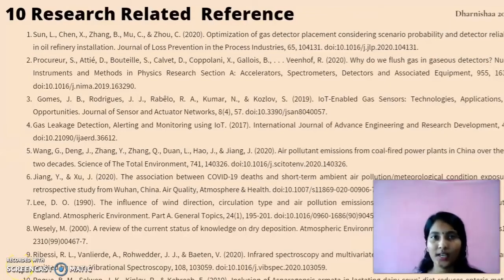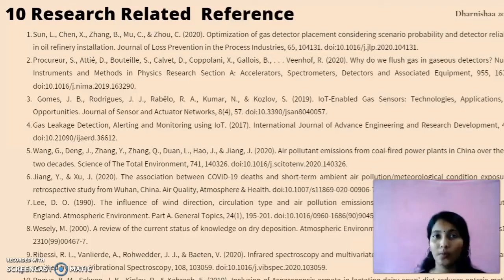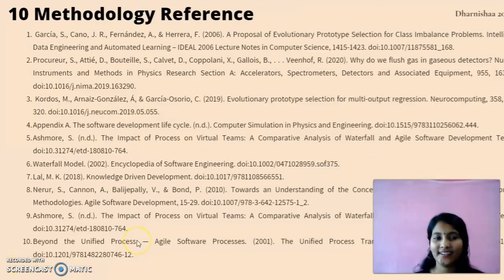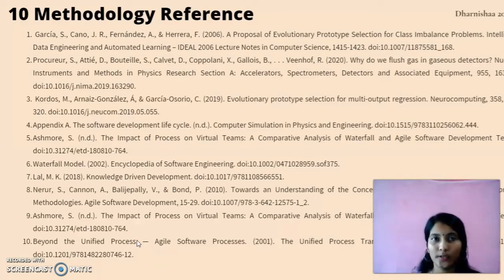As per my supervisor's advice, I have referred to 30 journals. I divided them into three groups of 10: 10 journals oriented to my subject and IoT devices, 10 journals about air pollution, and 10 journals about methodology. I referred to the waterfall model, incremental model, and spiral model, and ultimately chose the evolutionary prototype model, which is most suitable for my project.